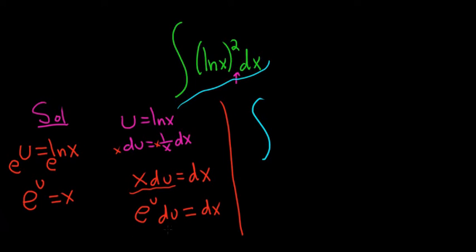So dx is e to the u du. So it's e to the u. And then ln is u, so it's u squared du. Let's write it as u squared e to the u du.